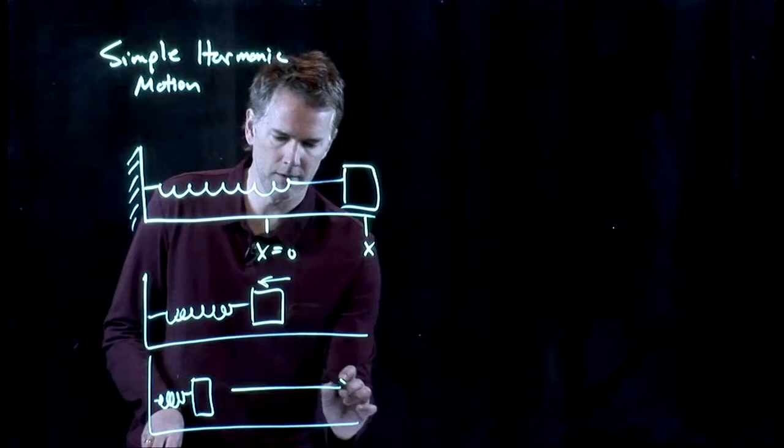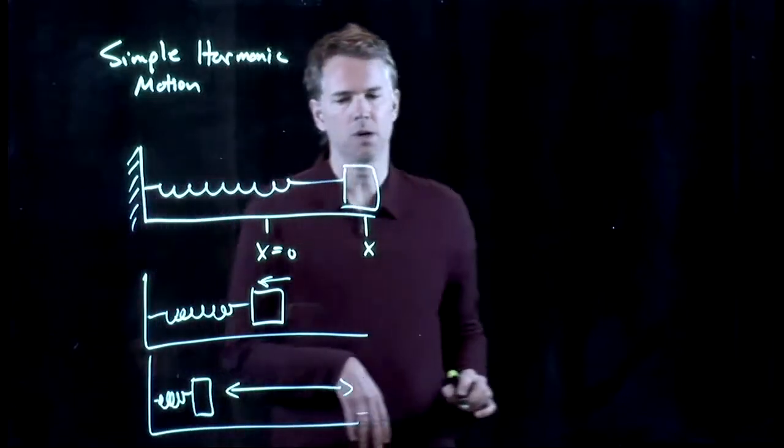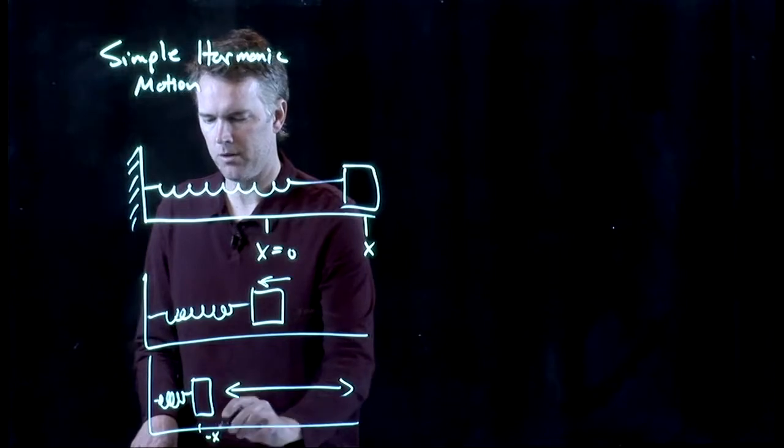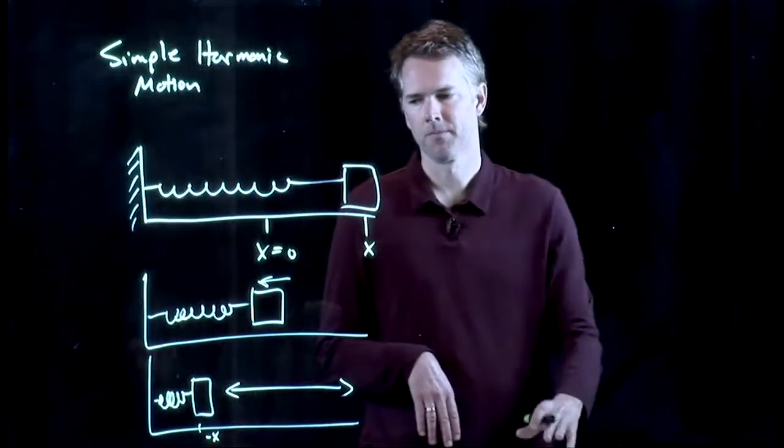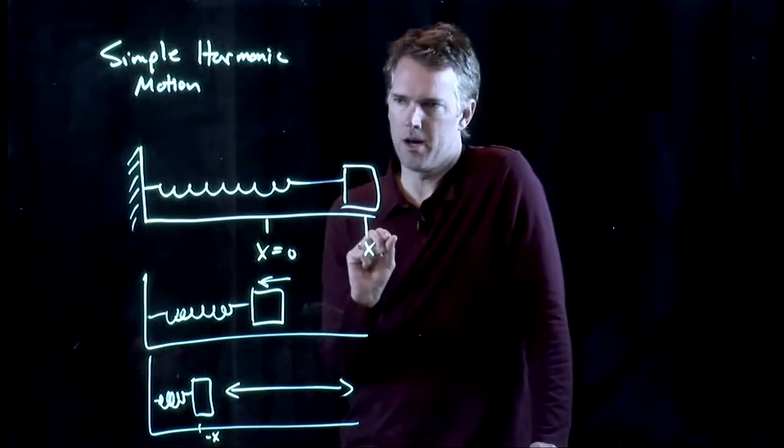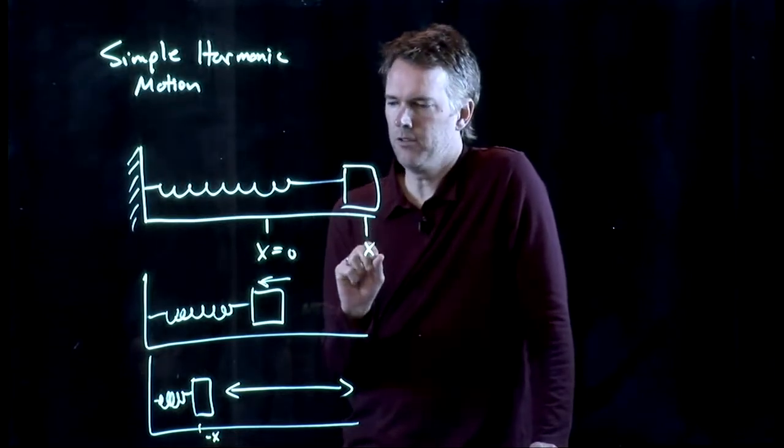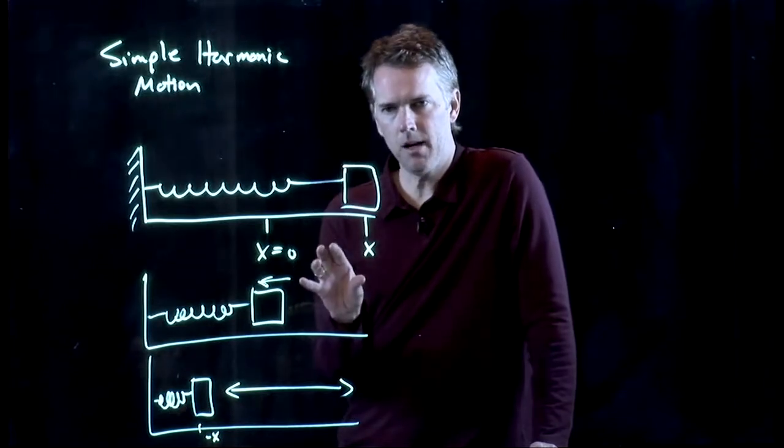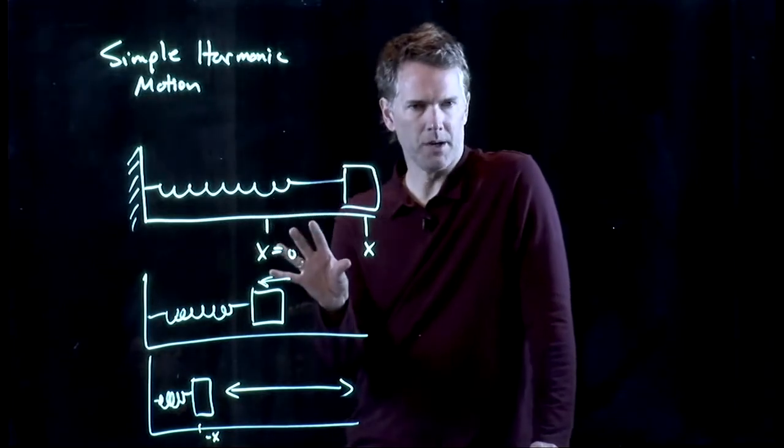All right. And it will just go back and forth between those two points. If we stretch it out to x, this is of course negative x. This is the basic model for simple harmonic motion. And this is a great point to start to tackle the math because we understand a little bit about springs.